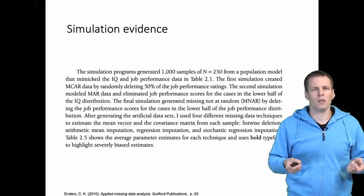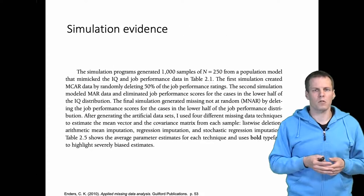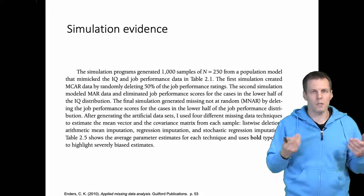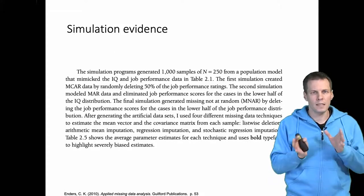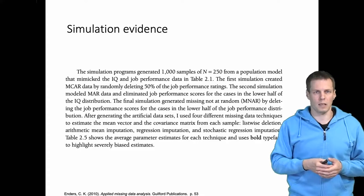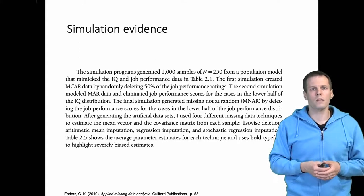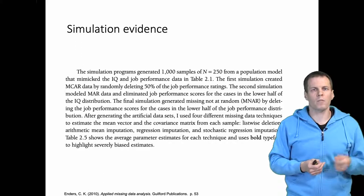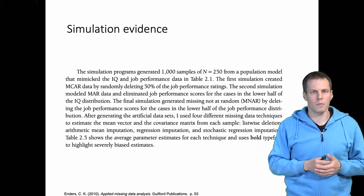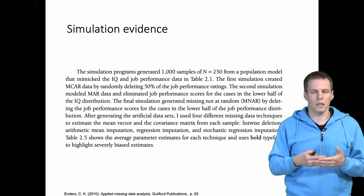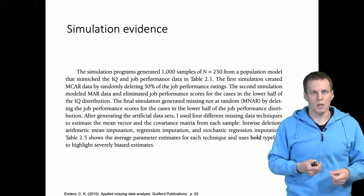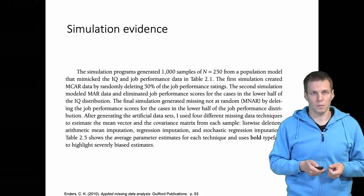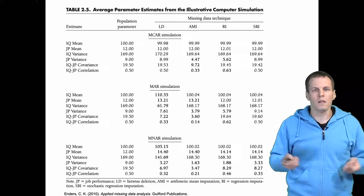Let's look at a comparison. Enders presents a Monte Carlo simulation study with a sample size of 250 and 1000 replications. He generates data sets and estimates using different techniques under three conditions: missing completely at random (MCAR), where missingness is a purely random process; missing at random (MAR), where missingness depends on the IQ value; and missing not at random (MNAR), where missingness depends on the job performance values themselves. Missing data is always 50% and only occurs in job performance.